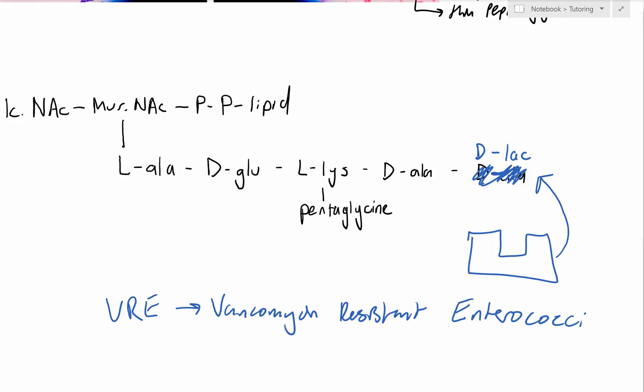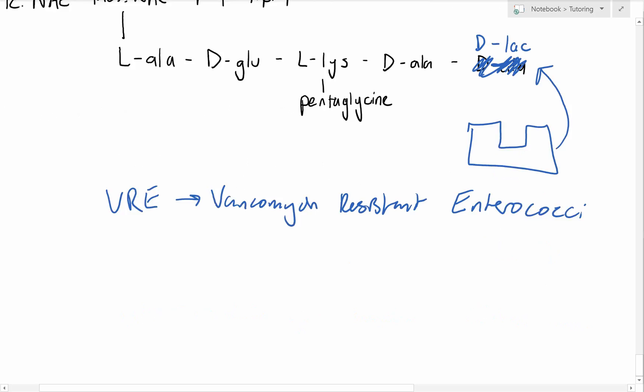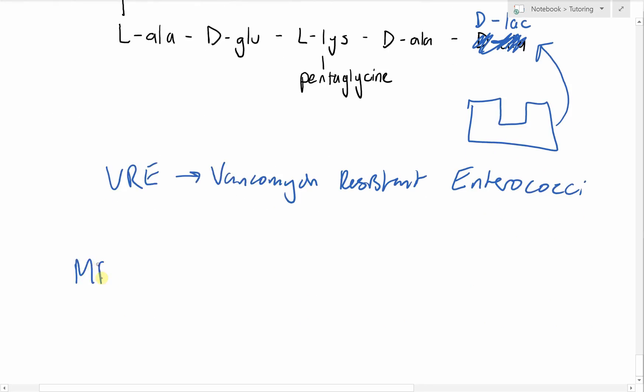We use vancomycin as our primary antibiotic to treat MRSA. If you remember that's our methicillin-resistant Staphylococcus aureus. This guy is pathogenic - it causes ulcers, can cause sepsis, abscesses.